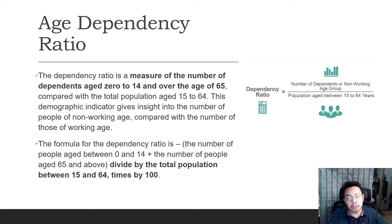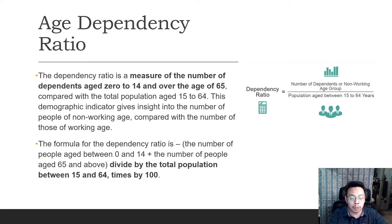The age dependency ratio is a measure of the number of dependents aged 0 to 14 and over 65, compared with the total population aged 15 to 64. This demographic indicator gives insight into the number of people of non-working age compared with those of working age. The formula is: (population aged 0–14 + population aged 65 and above) divided by the population aged 15–64, multiplied by 100.